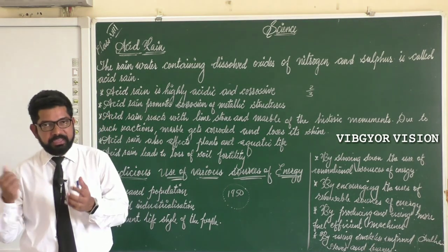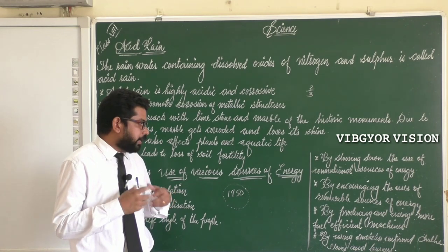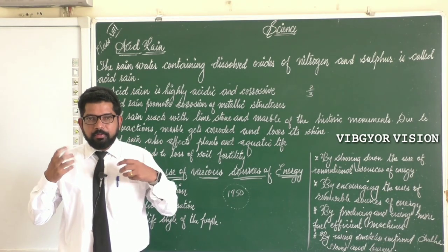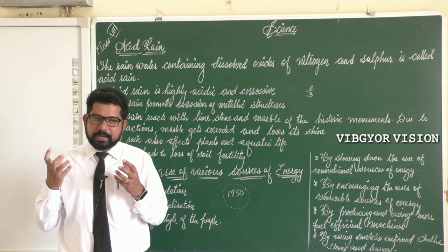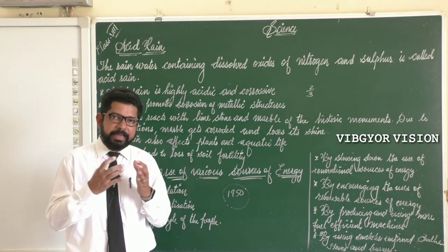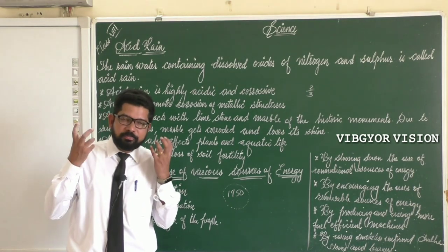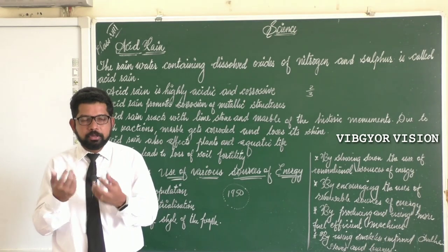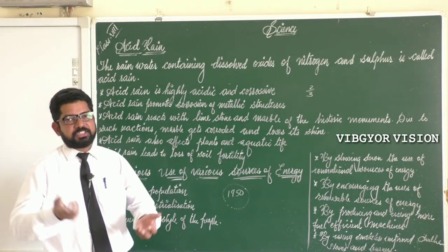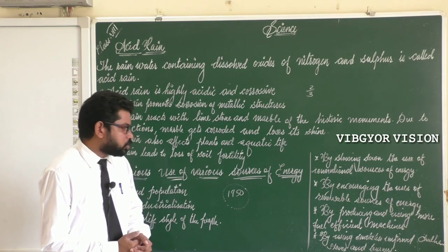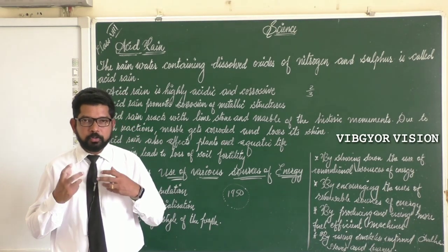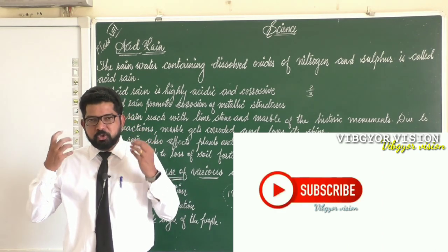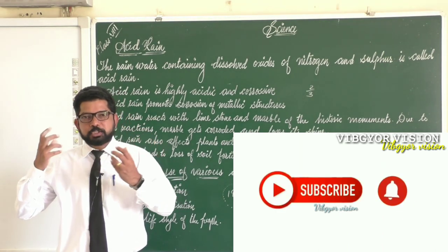We should produce and use more fuel-efficient machines — by using less fuel, we get more benefit. For example, using LED lights saves electricity while providing more light. Similarly, vehicles that use less fuel and give more mileage should be produced and used. We should also use smokeless improved chulhas, stoves, and burners to use fuel in a more judicious manner and preserve resources for future generations.